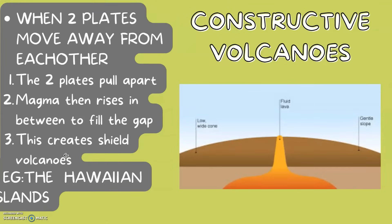Constructive volcanoes are formed when two plates move away from each other. The two plates pull apart, which allows a gap to be made. The magma then rises up and fills this gap, creating a shield volcano. An example of this is the Hawaiian Islands.